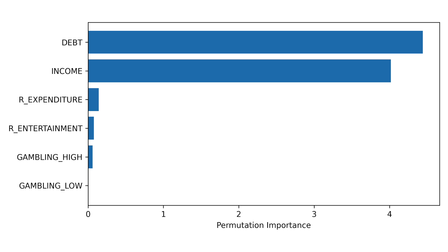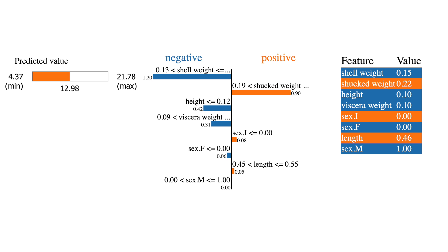Feature importance scores are a collection of methods, all used to answer one question: which model features have contributed the most to predictions in general? Amongst all these methods, permutation feature importance is the most popular. This is due to its intuitive calculation and because it can be applied to any machine learning model. Understanding PFI is also an important step in understanding more complex explainable AI methods like SHAP, LIME, and PDPs.